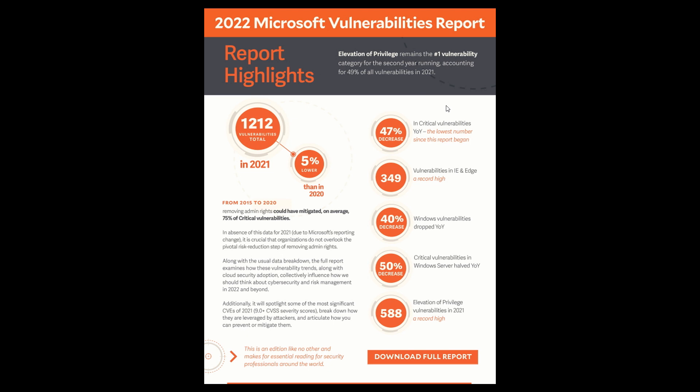In case you were unaware, Microsoft basically groups different vulnerabilities pertaining to their products into seven main categories: remote code execution, elevation of privilege, security feature bypass, tampering, information disclosure, denial of service, and spoofing vulnerabilities — which you might have heard me mention previously on this channel.